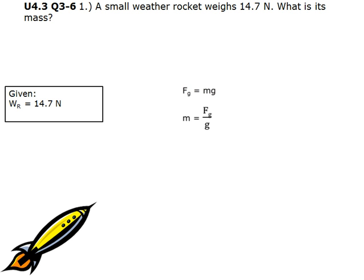We isolate the mass by dividing both sides by g. So it gives us the equation mass equals force of gravity divided by gravitational constant. We input our units and we get 14.7 newtons divided by 9.8 meters per second squared. This gives us a mass of 1.5 kilograms.